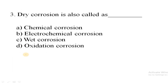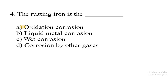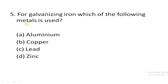Question three: dry corrosion is also called as — the correct answer is A, chemical corrosion. Question four: the rusting of iron is — the answer is A, oxidation corrosion. Question five: for galvanizing iron, which of the following metals is used? The correct answer is D, zinc. This is the end of our discussion. Thank you.